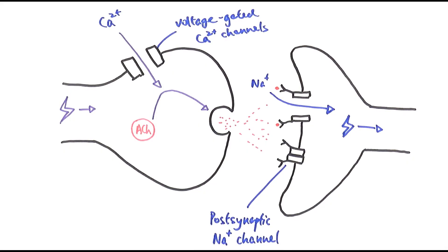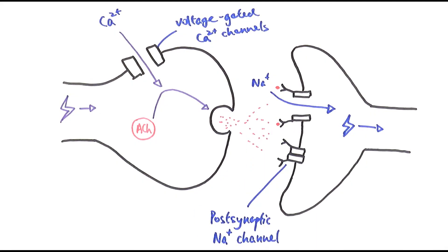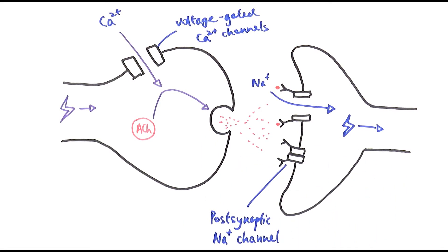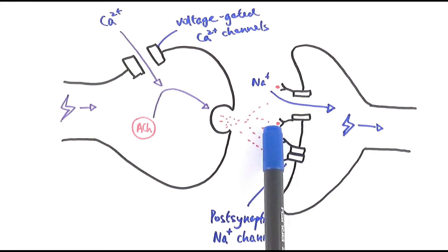We don't want acetylcholine to stay stuck on the receptors, because that would cause sodium ions to continuously flow in, meaning the signal never stops. We don't want a continuous influx and continuous generation of action potentials — otherwise it would be like going into a seizure from continuous excitatory impulses. So we need a way to stop the new action potential, and to do that we have to break the acetylcholine down.